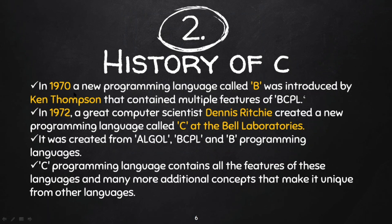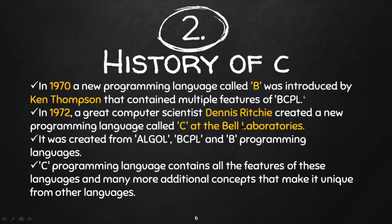In the 1970s, a new programming language called B was introduced by Ken Thompson. It contained multiple features of BCPL. Then Dennis Ritchie created a new programming language called C at Bell Laboratories. C was created from B — it is the upgraded version of B.